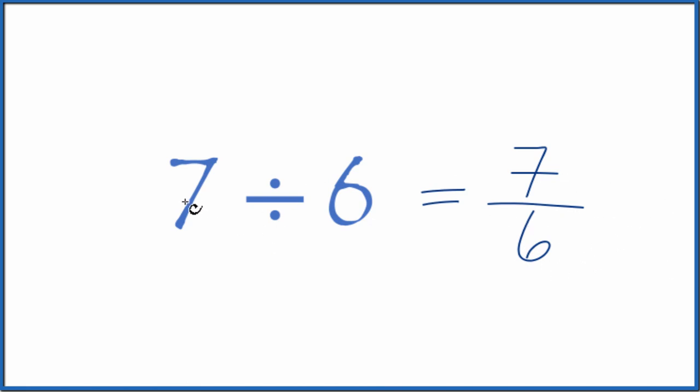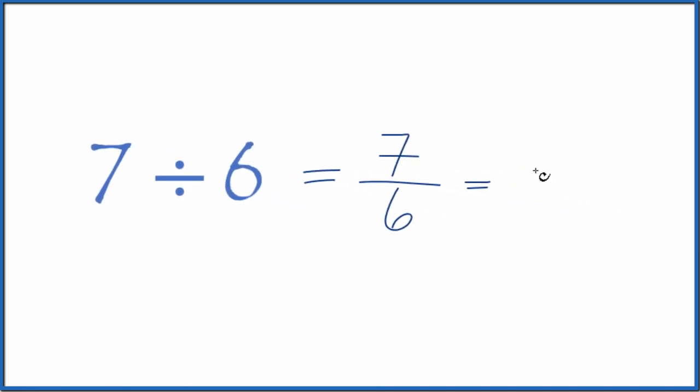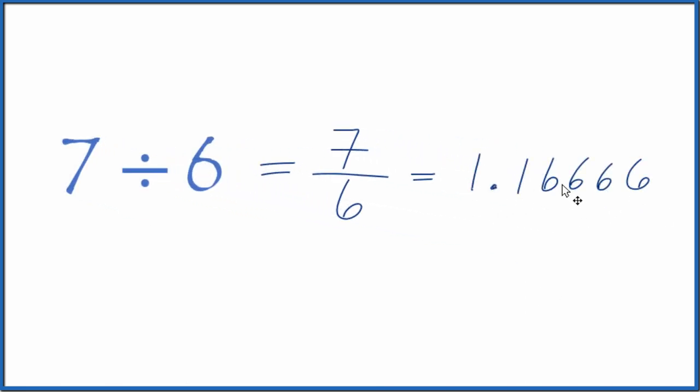And you could, on your calculator, divide 7 by 6 to get the answer. 7 divided by 6, that gives you 1.16666. The 6's just keep going.